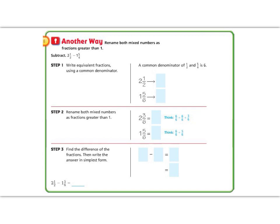The first thing we're going to do is write them with a common denominator of 6. We're going to rename 2 and a half as 2 and 3 sixths, because 3 is half of 6, so that's an equivalent fraction. And 1 and 5 sixths stays the same because it already has sixths on the bottom. Now we're going to make improper fractions out of both. We multiply the denominator by the whole number and add to the numerator: 2 times 6 is 12, plus 3 is 15, so that's 15 sixths. Then 1 times 6 is 6, plus 5 is 11 sixths. Now I've renamed both mixed numbers as improper fractions and I can subtract.